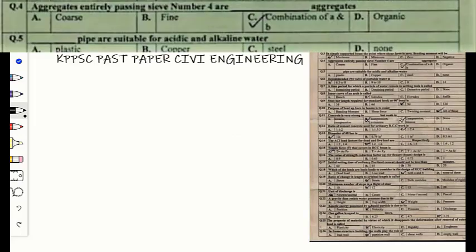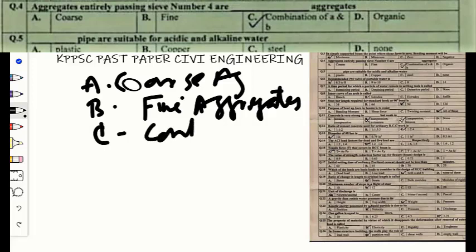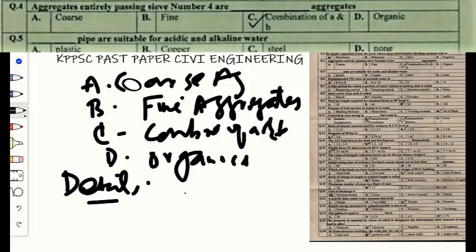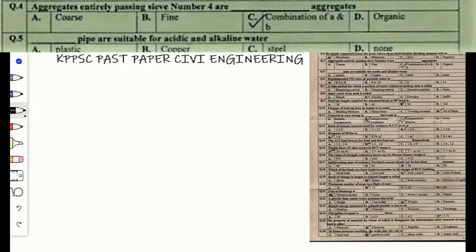Question number four: aggregate entirely passing sieve number four is — option A coarse aggregate, option B fine aggregate, option C a combination, option D organic. Sieve number four has four holes per linear inch; the size is 4.75 mm. Coarse aggregate is retained on sieve number four, while fine aggregate passes through it. So the correct option is B — fine aggregate.